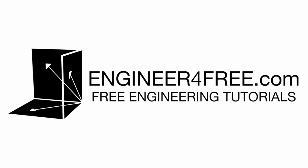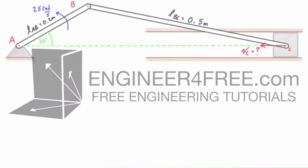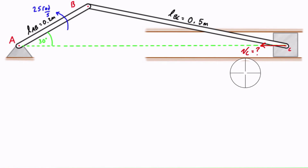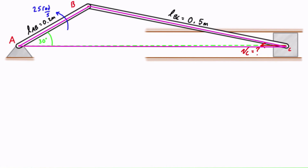Welcome back. We're here one more time solving the same crankshaft problem, looking for the velocity at point C. In this case we're going to be using absolute motion analysis to solve the problem. The general method is to draw a triangle over our system — a line from A to B, from B to C, and also from A to C.